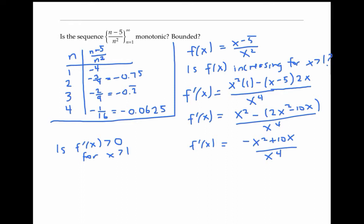To check if f prime of x is greater than zero, I'll first set f prime of x equal to zero. So I'll set my ratio here equal to zero, which means my numerator needs to be equal to zero.